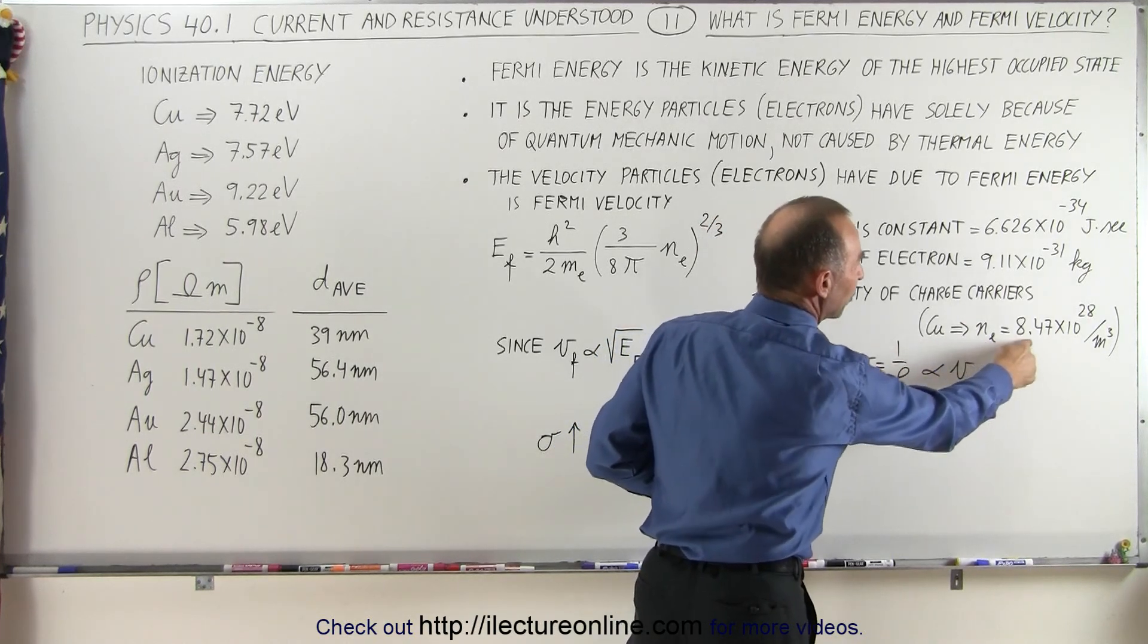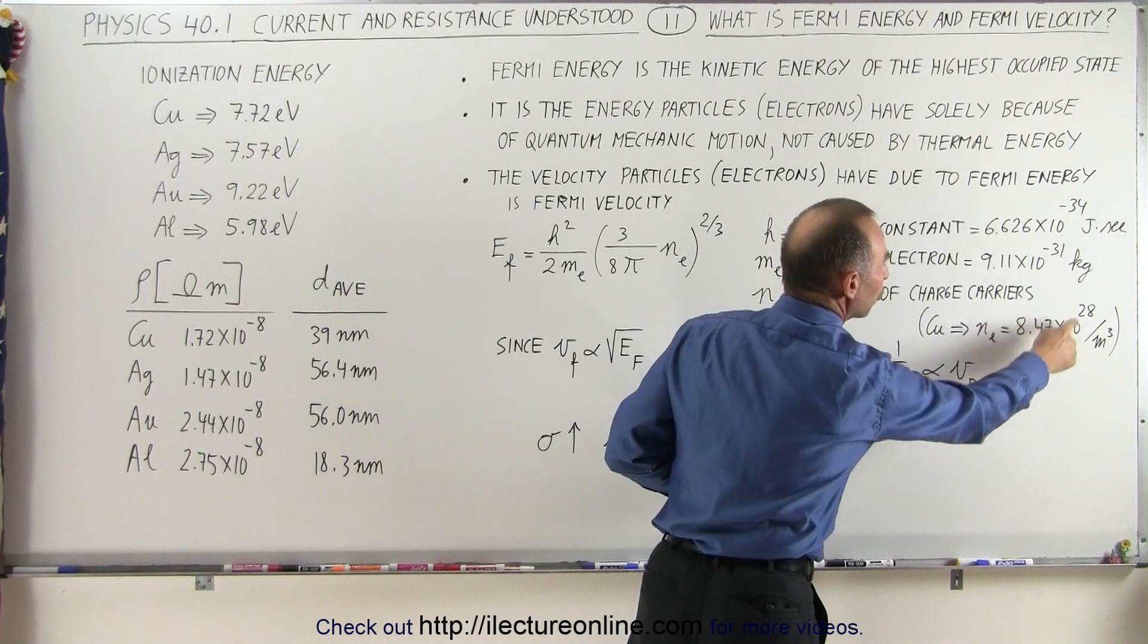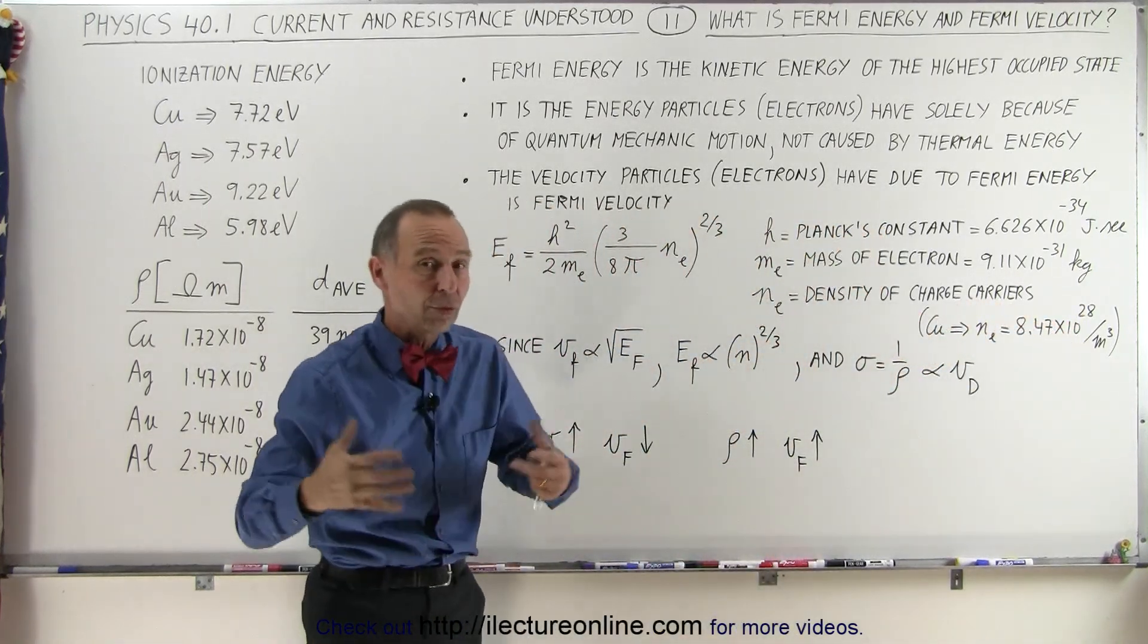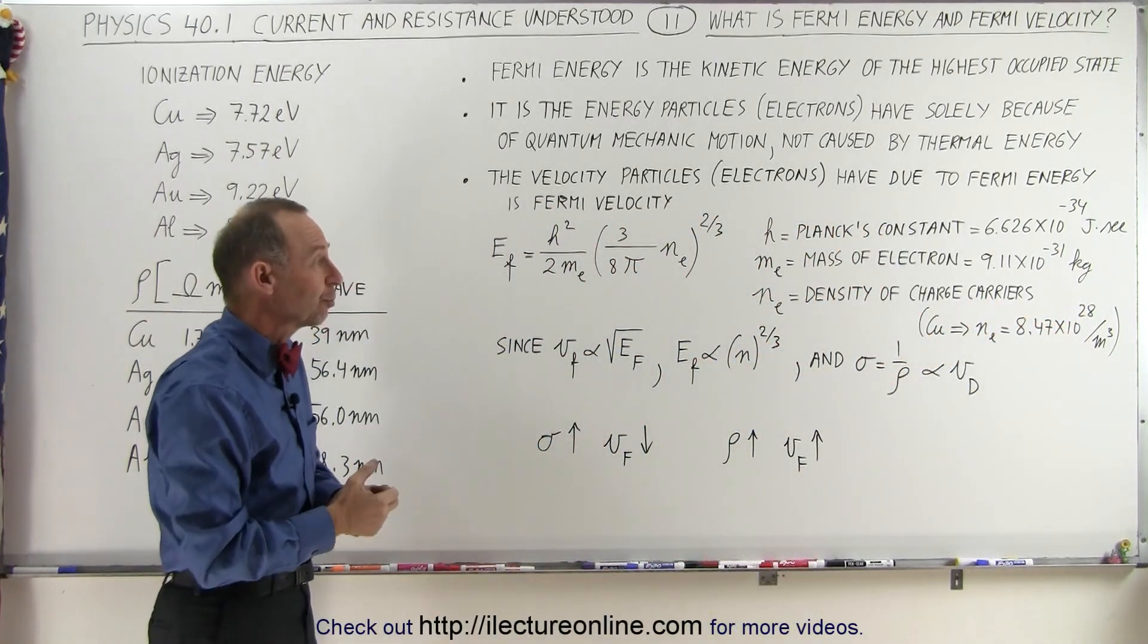For copper, we have as an example the density to be 8.47 times 10 to the 28 atoms per cubic meter, which of course means that many charge carriers per cubic meter.